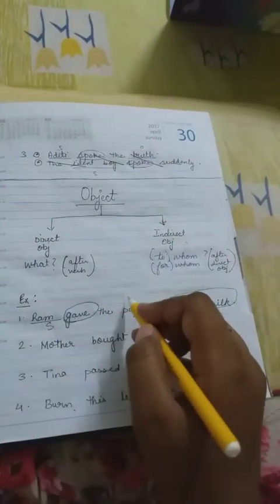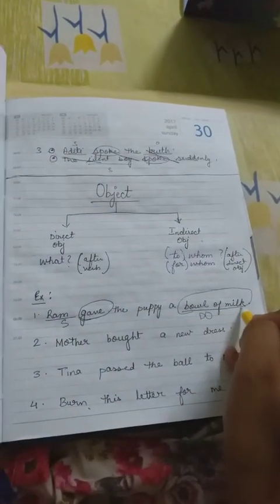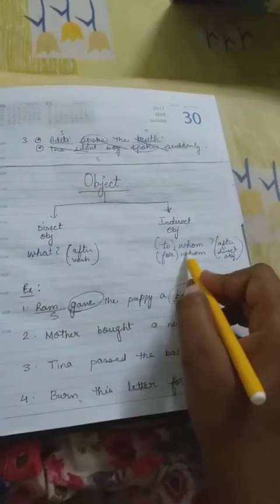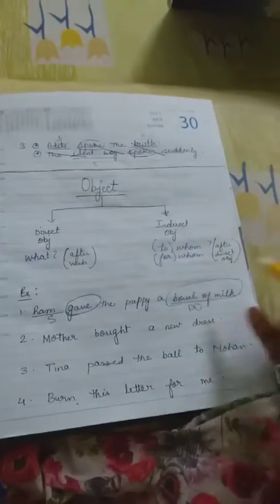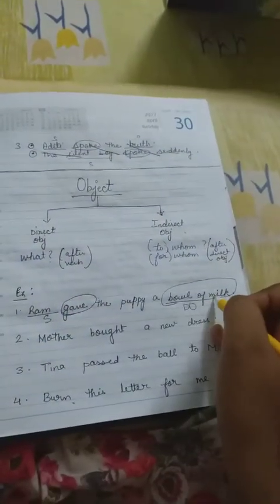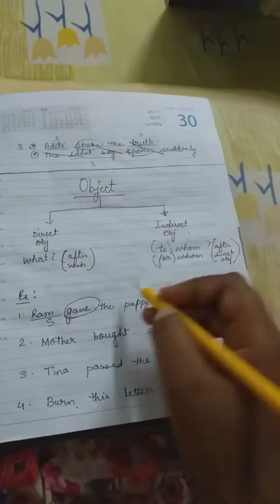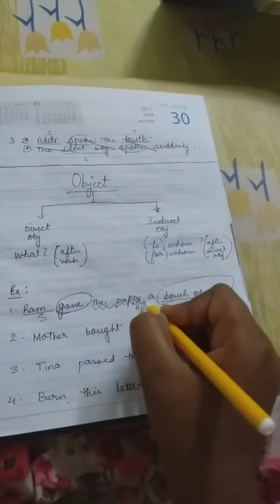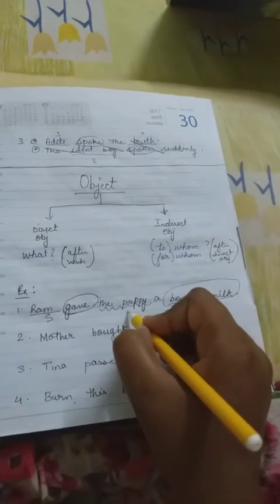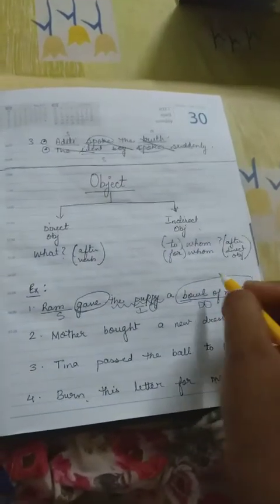Ram gave what to the puppy — a bowl of milk. And to whom did he give it? The puppy. So 'the puppy' is your indirect object.